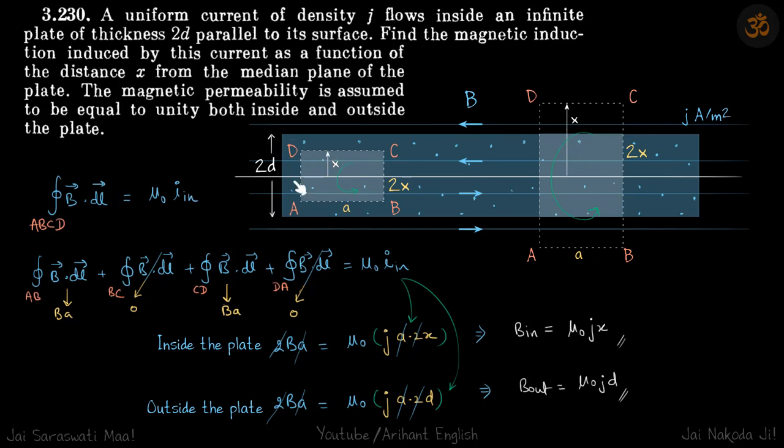So we'll do it by Ampere's law. We have created two rectangular loops and let's say the width of the loop is A. So if this is the distance x, we need to find the field. So the length of this side is 2x. So here also this is x. So this is 2x. So our loop is ABCD.